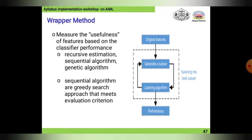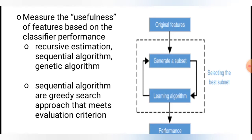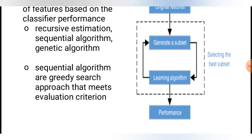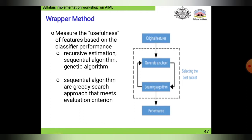The wrapper method measures the usefulness of features based on classifier performance. It is a recursive estimation approach using sequential algorithms and genetic algorithms. Sequential algorithms are greedy search approaches that meet an evaluation criteria. Original features are passed to the learning algorithm iteratively to generate subsets until the wrapper method algorithm performance is satisfactory — at which point the best subset is selected.